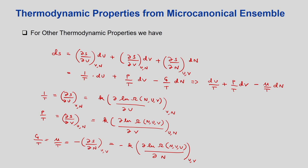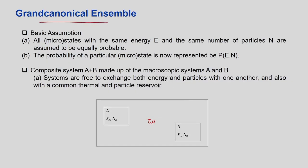In the grand canonical ensemble, the number of molecules is not constant because they are free to exchange both energy and matter with the surroundings. We will use a similar approach to what we did for the canonical ensemble. The basic assumption is that all microstates with the same energy E and the same number of particles N are assumed to be equally probable, similar to the micro canonical. The probability of a particular microstate is represented by P(E, N) — the probability of locating a system with energy E and number of molecules N.